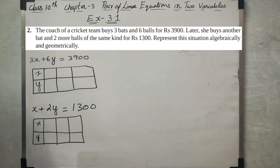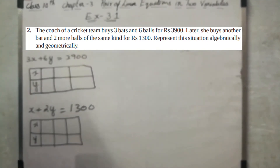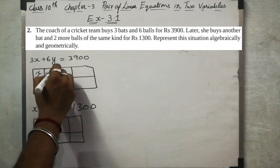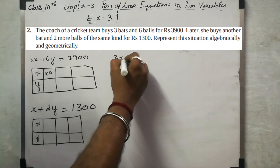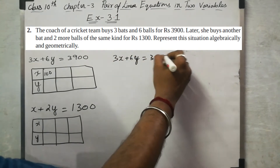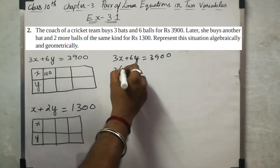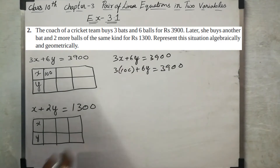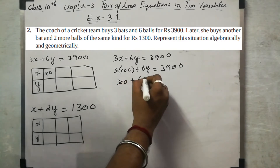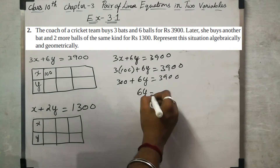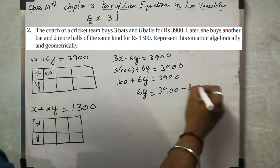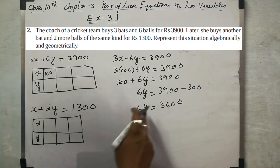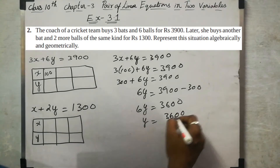Now, for a graphical representation with points, let x equal to 100. Using the first equation, 3x plus 6y equals 3,900: 3 into 100 plus 6y equals 3,900, so 300 plus 6y equals 3,900, so 6y equals 3,600, therefore y equals 3,600 divided by 6, which gives y equals 600.